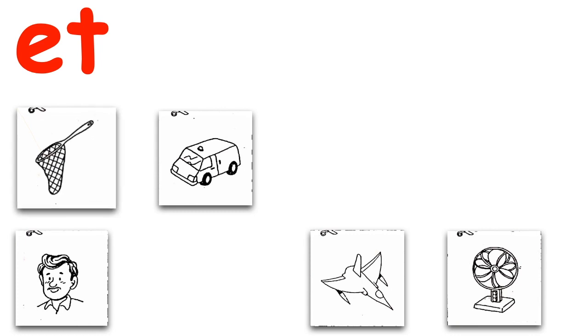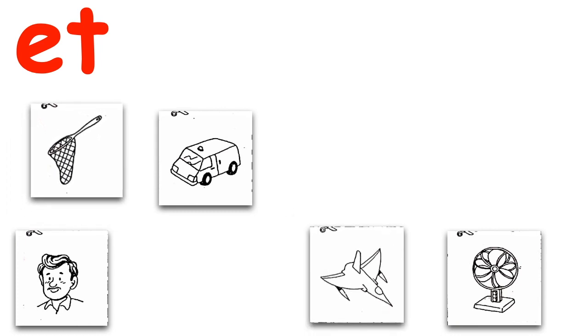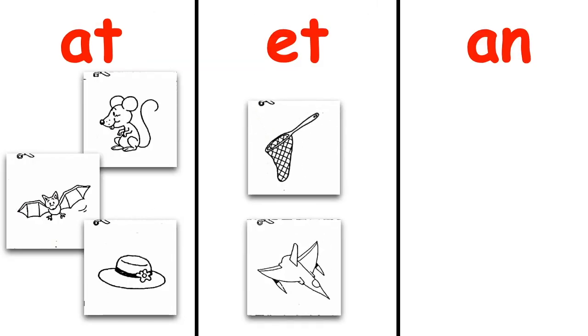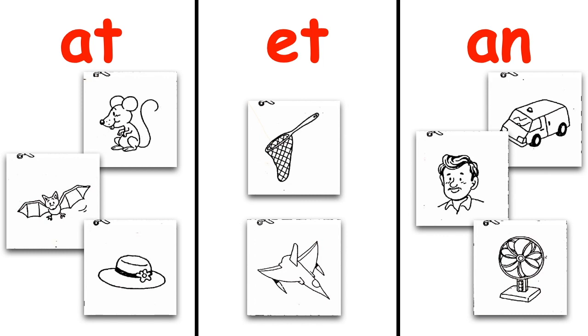Next we look at ET. We have net and jet. And for the last group AN, we have van, man, and fan.